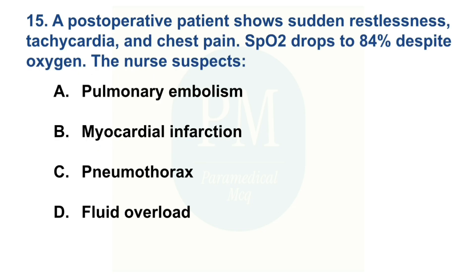A postoperative patient shows sudden restlessness, tachycardia, and chest pain. SpO2 drops to 84% despite oxygen. The nurse suspects — Option A: pulmonary embolism. Option B: myocardial infarction. Option C: pneumothorax. Option D: fluid overload. The correct option is Option A: pulmonary embolism.